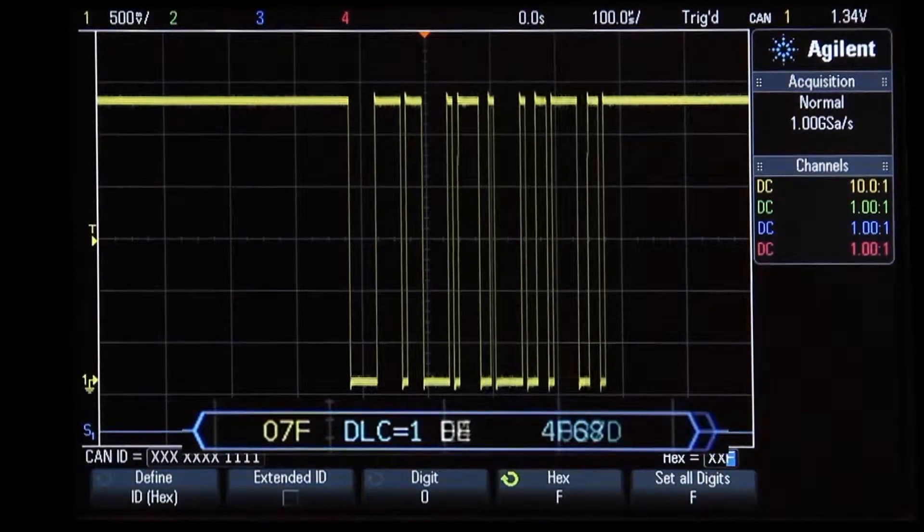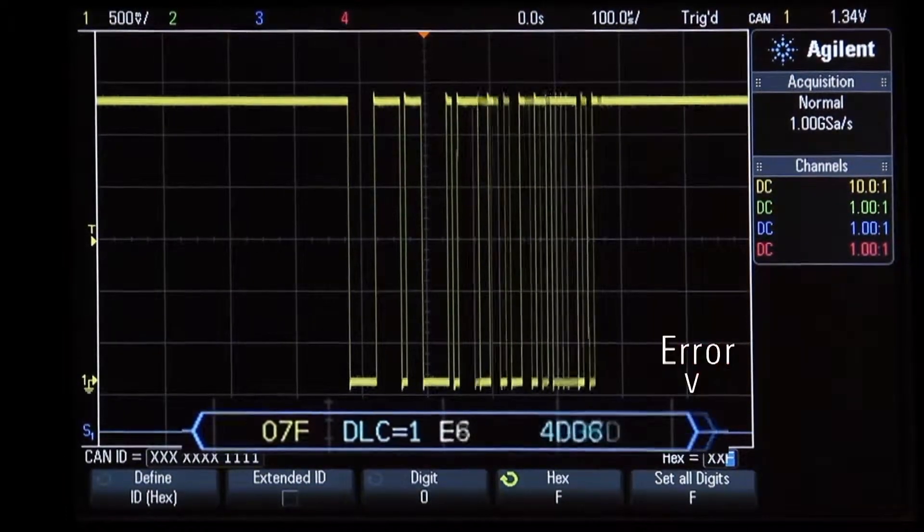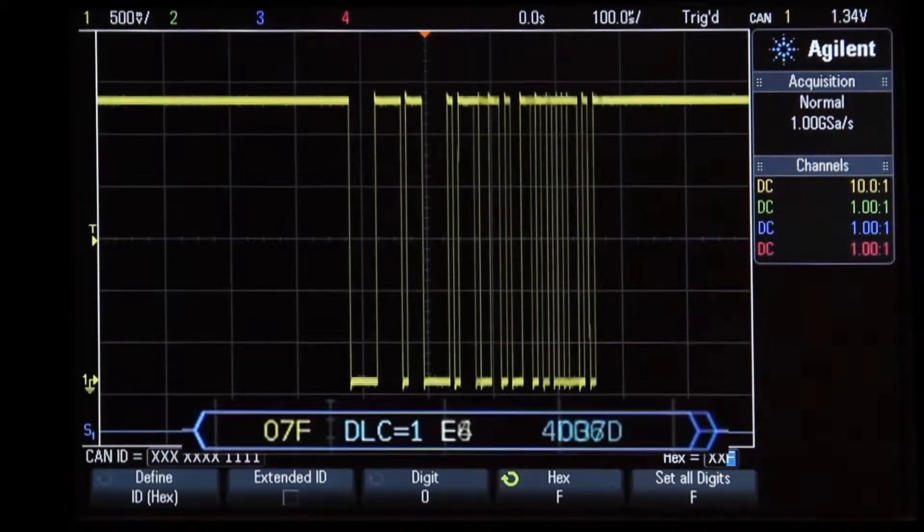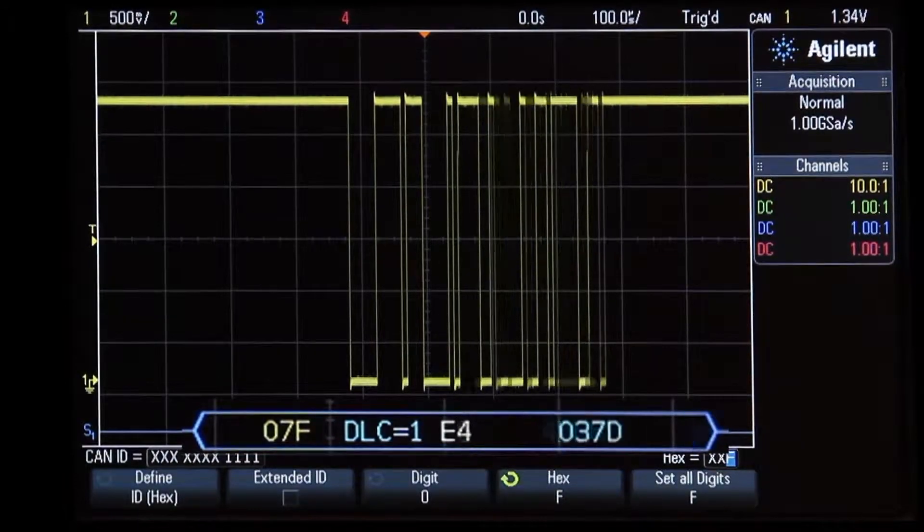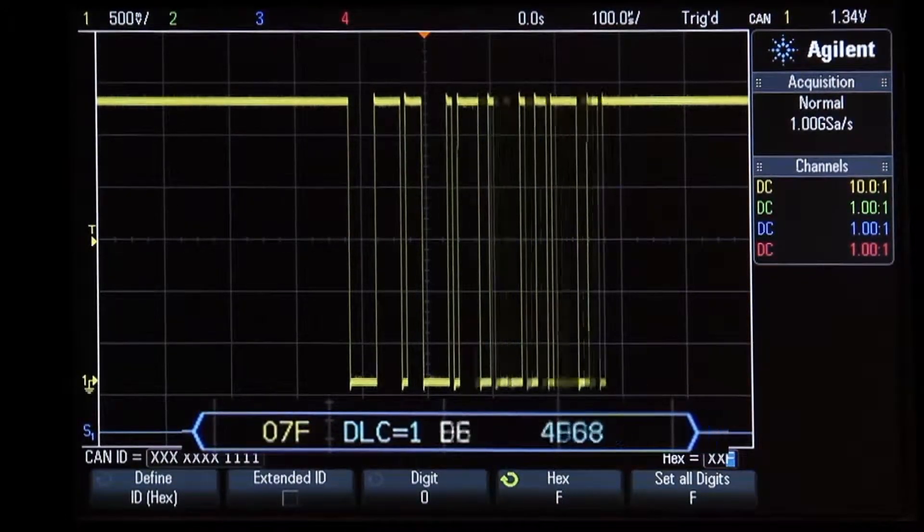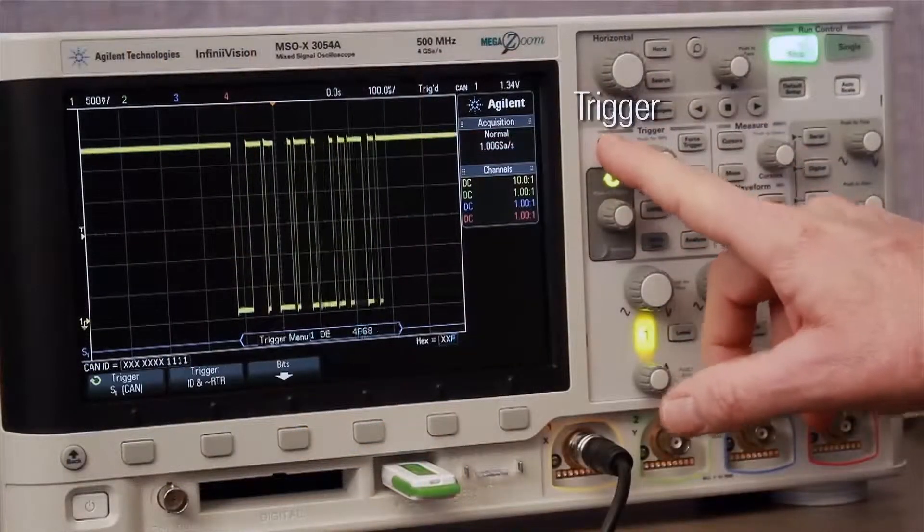Note that we can also see a red error message at the end of this decoded frame. The scope is randomly detecting error frames while triggering on this frame. Let's now set up the scope to trigger on CAN error frames.